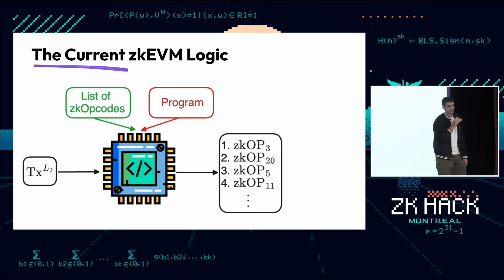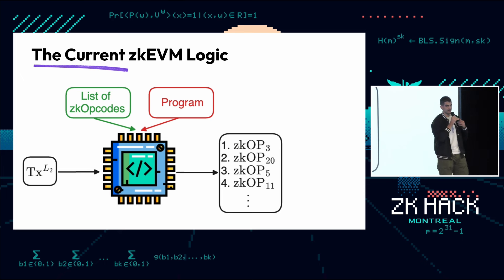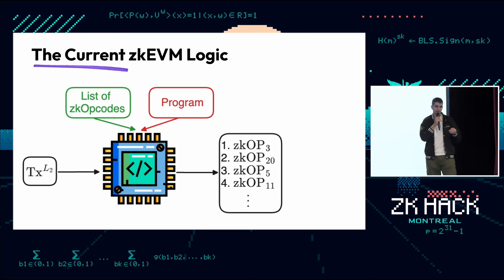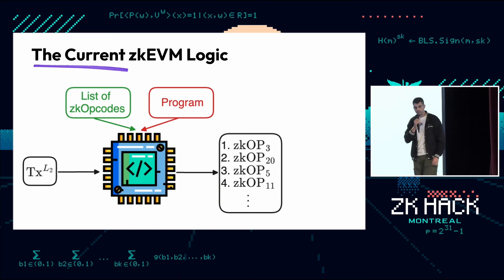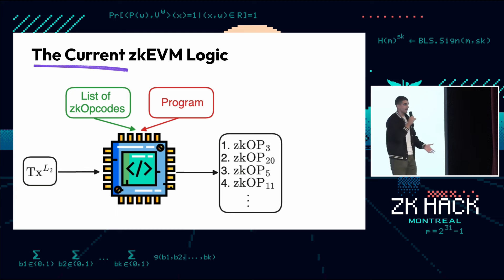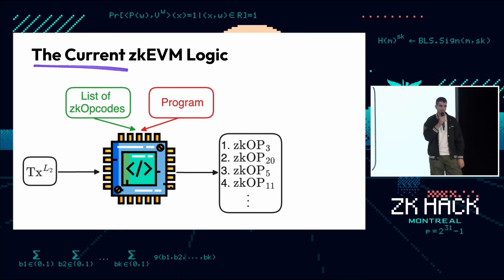Going a bit more into the details: when a user sends a transaction to L2, that transaction can be expressed as a set of EVM opcodes. The first option is to generate a proof of the validity of these EVM opcodes. But as you might know, the EVM was not designed to be ZK-friendly, which means the set of opcodes in the EVM are not that easy to prove.